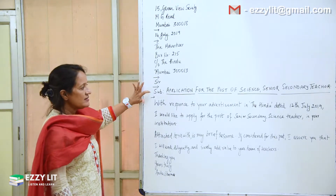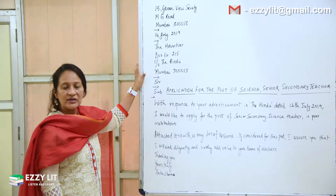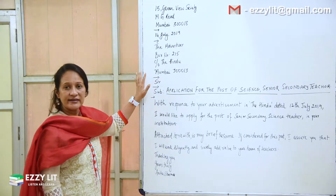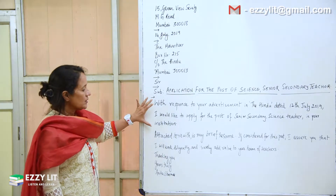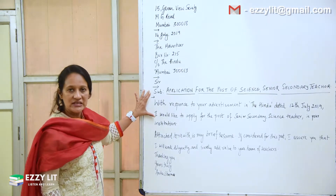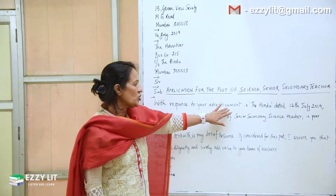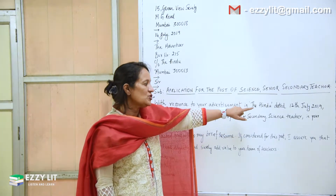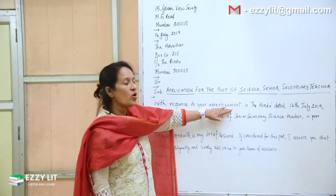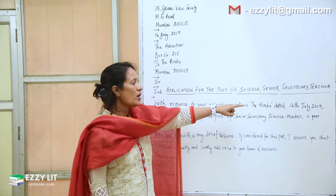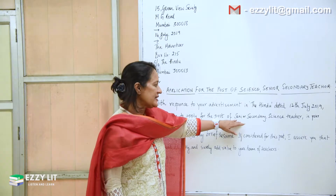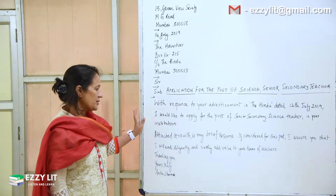Your salutation: 'Sir.' Leave a line. The subject is usually written in block letters — capital letters — so that it is very obvious, and you can of course underline it. Leave a line. Your first paragraph starts with where you got the information regarding this vacancy. So I've written: 'With response to your advertisement in The Hindu dated 12th July 2019.' The advertisement date will be before the date of your letter, so I've kept it two days earlier. 'I would like to apply for the post of Senior Secondary Science Teacher in your institution.'